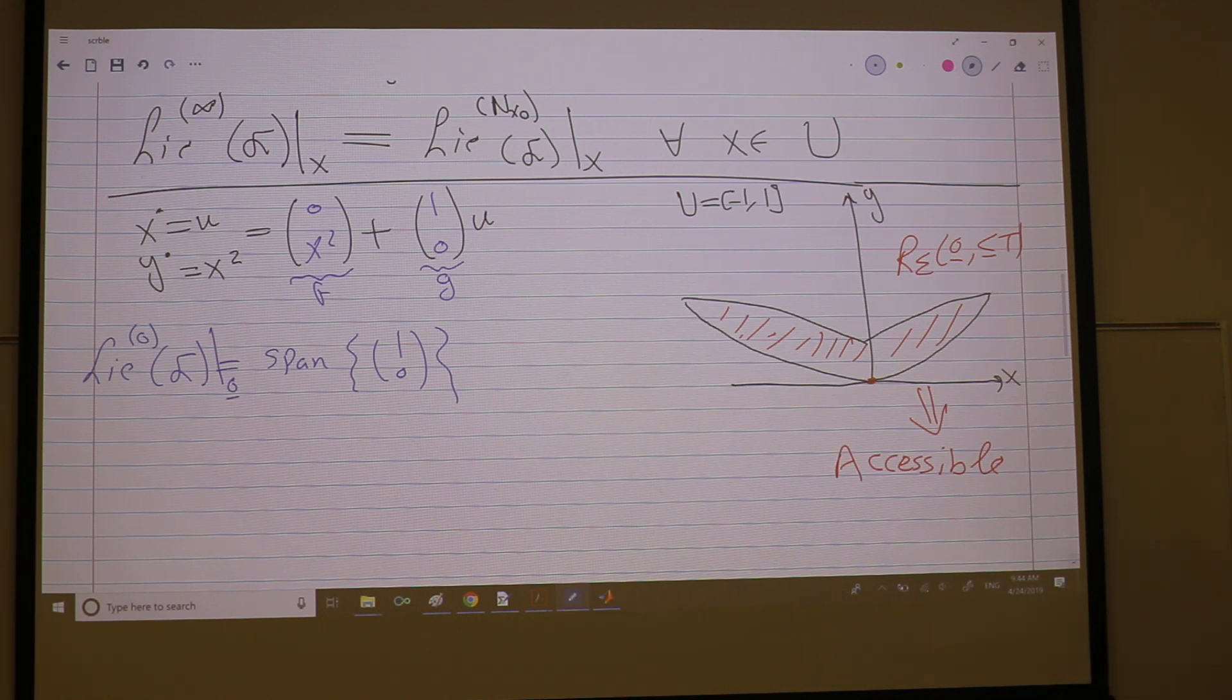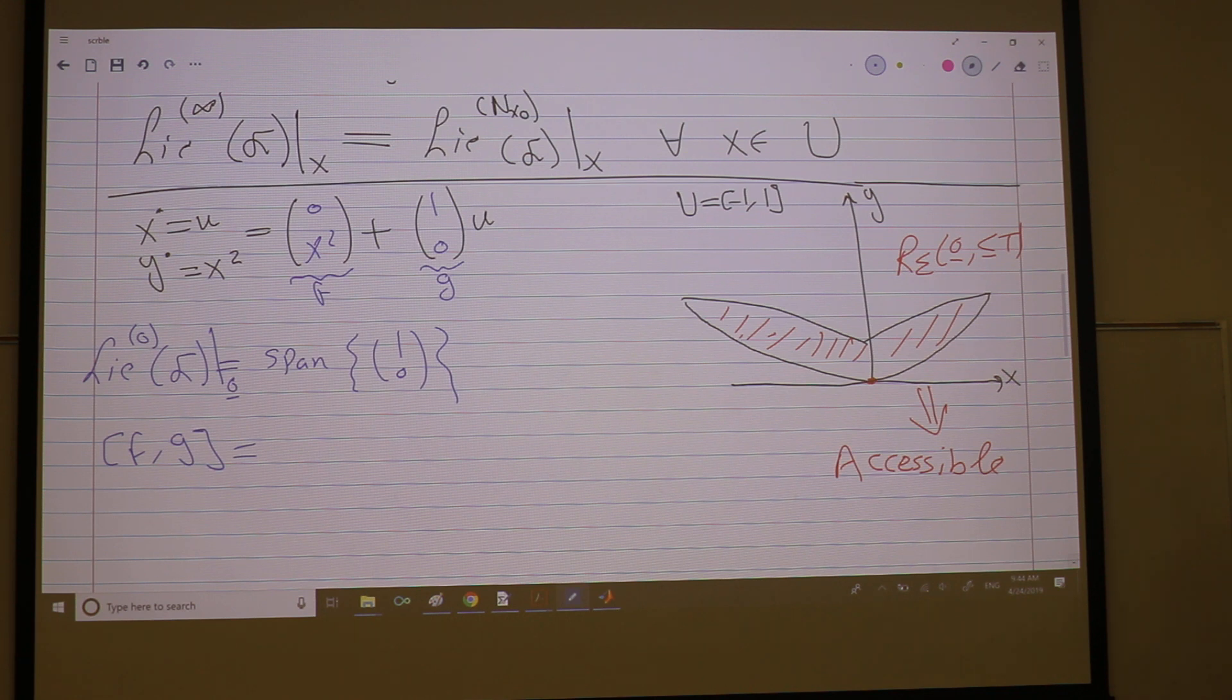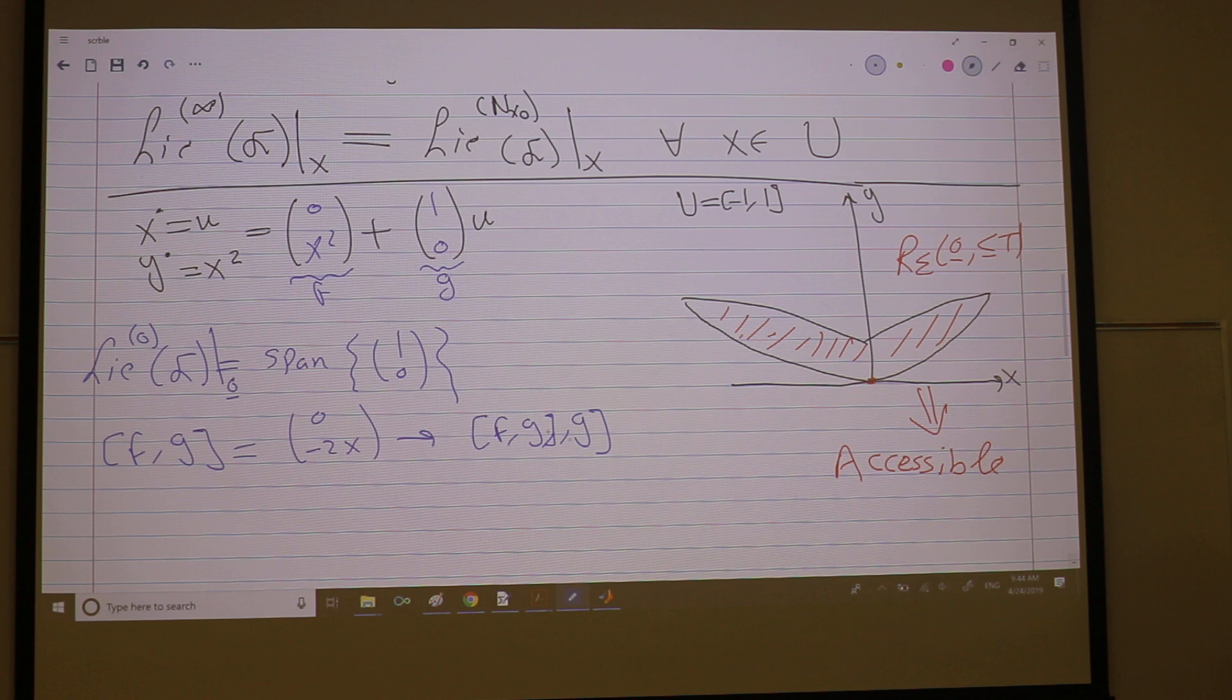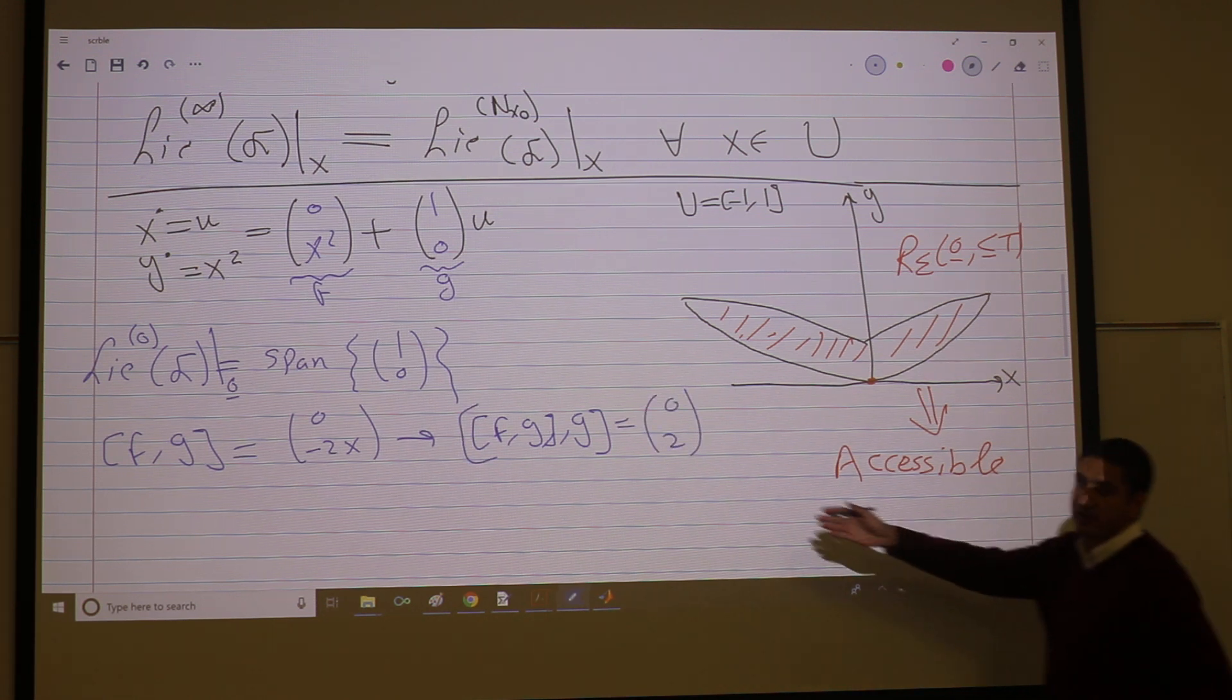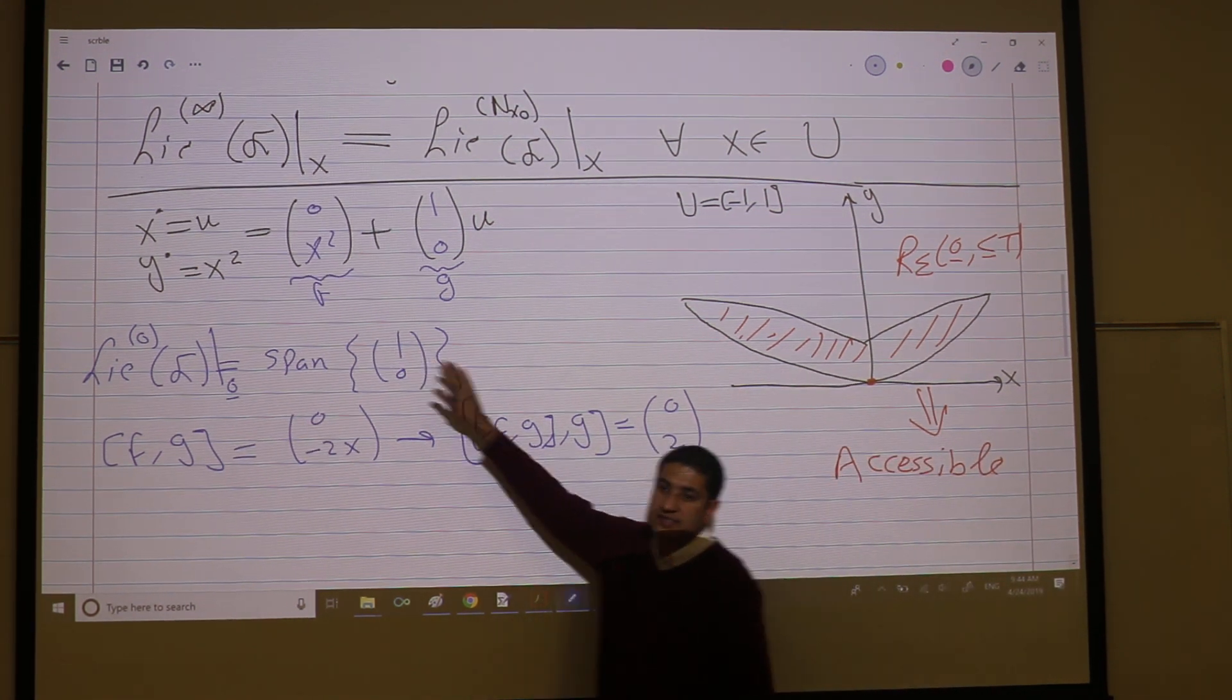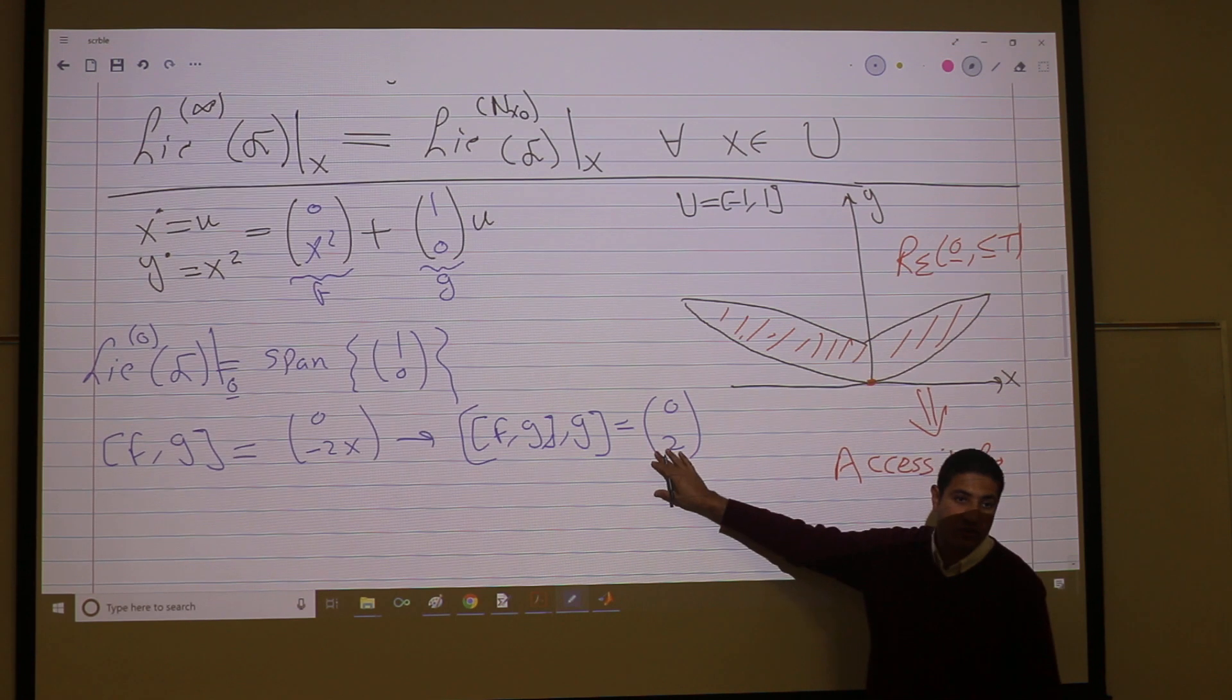Now if we go one more. So the Lie bracket between f and g is computed according to the definition. So this is zero, negative two x. When you evaluate it at the origin you get zeros. So you get nothing, so I go one more step. So f, g, and g. When you do that you get zero and two. Now I added one more direction, right? A new direction. I had no motion from the x, and now I can move along the y as well.